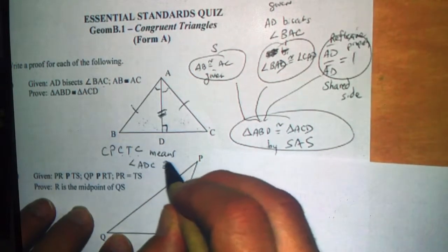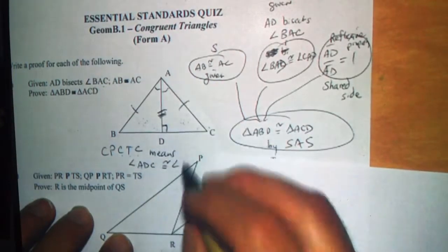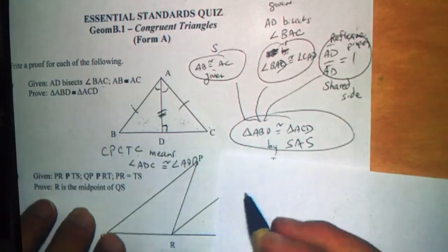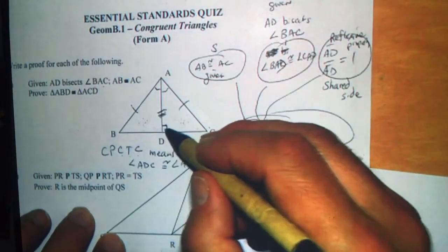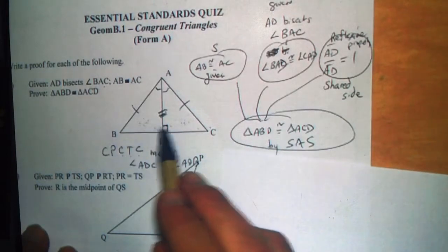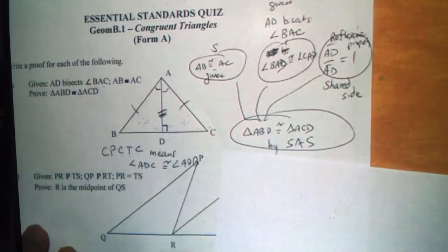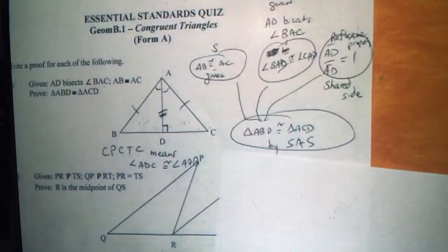Angle ADB is congruent to angle ADB, and since that's a straight line, this is going to be 90 degrees. There's only one way that this could work: if the straight line is 180 degrees and the two angles are congruent, then each has to be 90 degrees, with AD being a bisector.